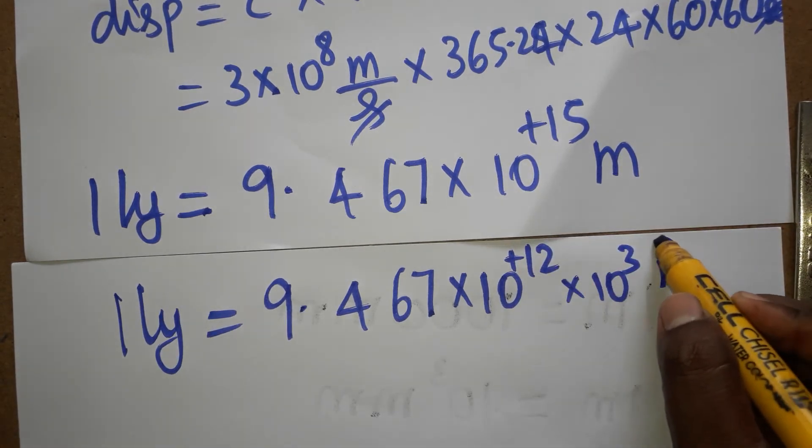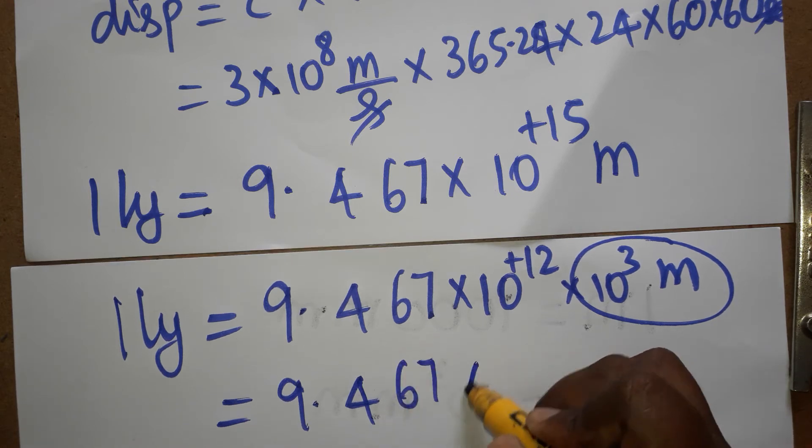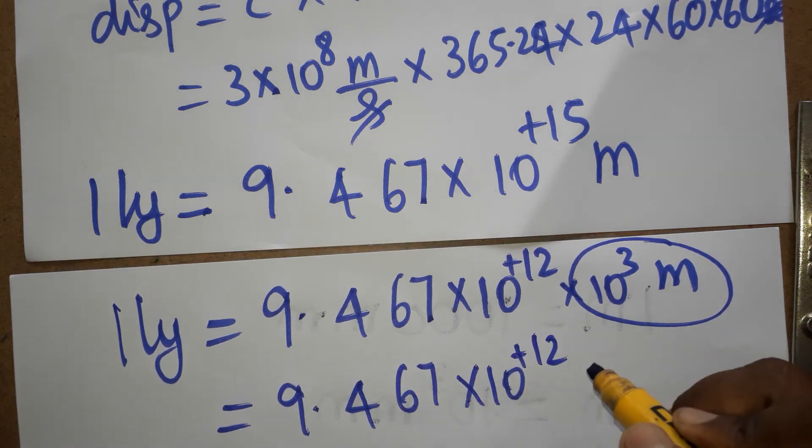So 15 I wrote as 12 plus 3. So 10 power 3 we can take it as kilometer. So it is 9.467 into 10 power plus 12 kilometers.